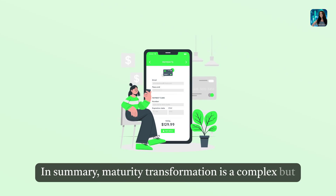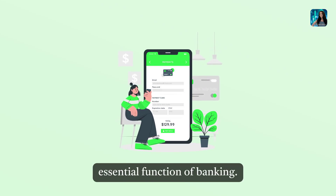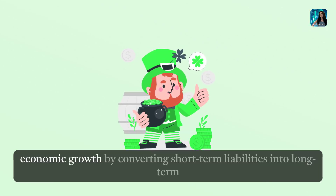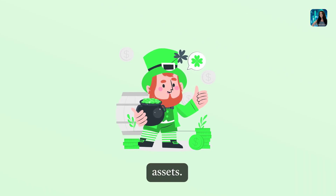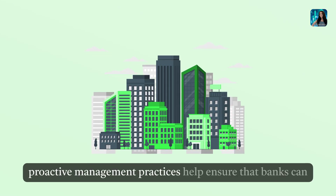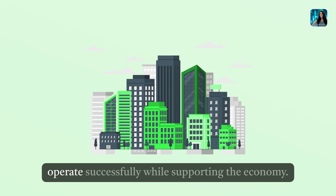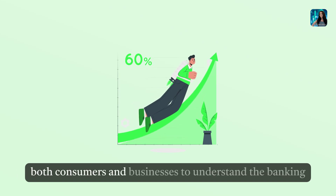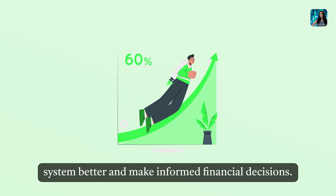In summary, maturity transformation is a complex but essential function of banking. It allows institutions to create liquidity and foster economic growth by converting short-term liabilities into long-term assets. While it carries inherent risks, regulatory frameworks and proactive management practices help ensure that banks can operate successfully while supporting the economy. Being aware of how maturity transformation works empowers both consumers and businesses to understand the banking system better and make informed financial decisions.